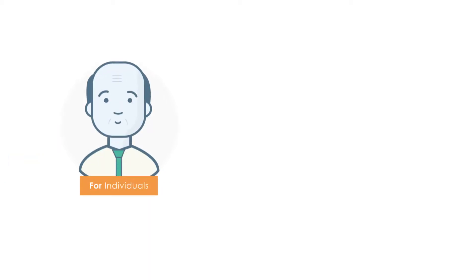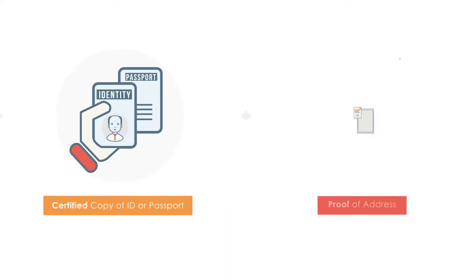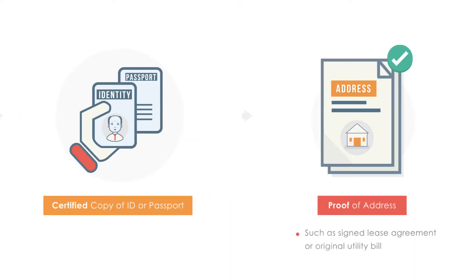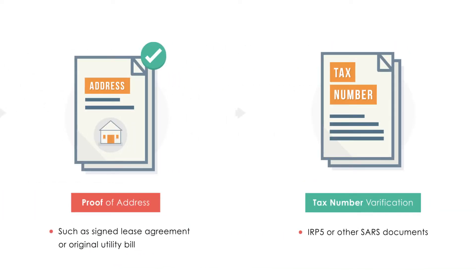For individuals, you will need a certified copy of their ID book or passport, proof of address such as a signed lease agreement or original utility bill, and an IRP-5 or other SARS documents to verify their tax number.